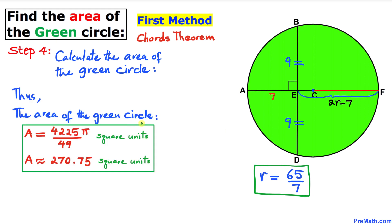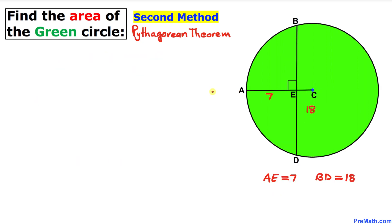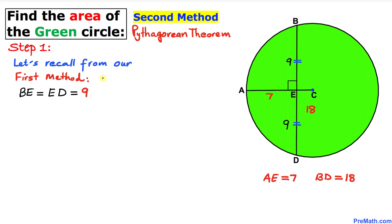That is the area of the green circle in both fractional and decimal form. Now let's look at the second method — the Pythagorean theorem method. Since the radius and chord are perpendicular, the chord is divided into two equal parts: BE equals 9 units and ED equals 9 units.